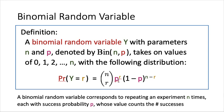For each particular case, the r specific experiments that need to be successful each occur with probability p, giving p to the power r. For the remaining n minus r experiments that must fail, this occurs with probability 1 minus p to the power n minus r. The number of ways to choose which r experiments succeed is n choose r. So whenever we see a binomial random variable, we should think of repeating an experiment n times, each with success probability p.